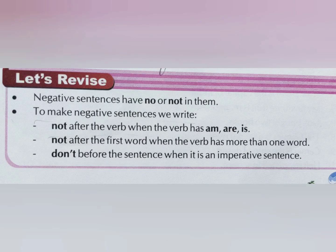It's a small chapter. Negative sentences have 'no' or 'not' in them. To make negative sentences: write 'not' after the verb when the verb is 'am,' 'are,' or 'is'; write 'not' after the first verb when the verb has more than one word — for example, 'is singing,' where 'is' and 'singing' are both verbs, so 'not' goes in between; and write 'don't' before the verb when it is an imperative sentence. Thank you.